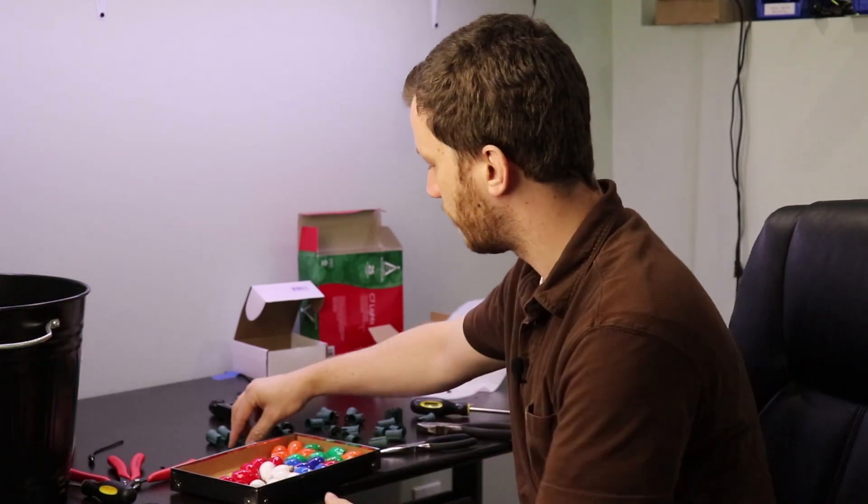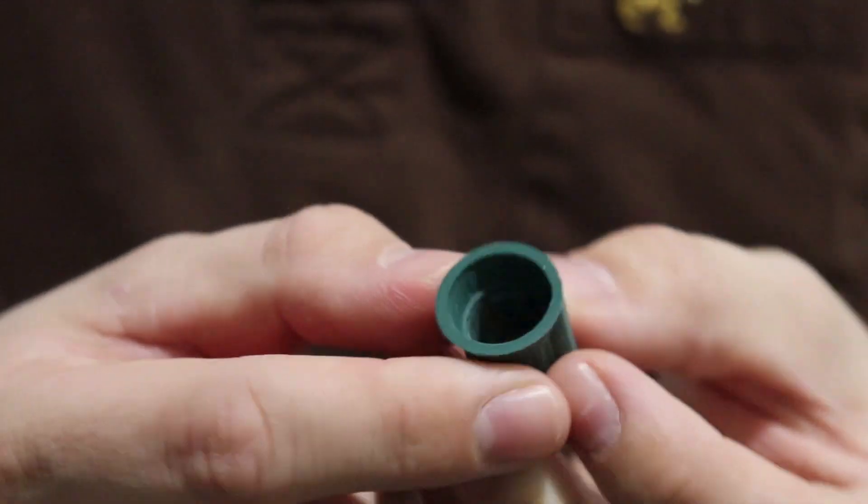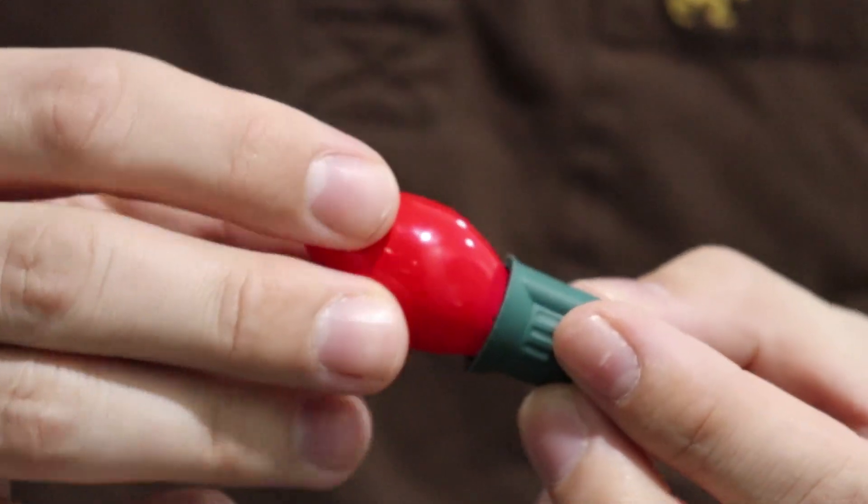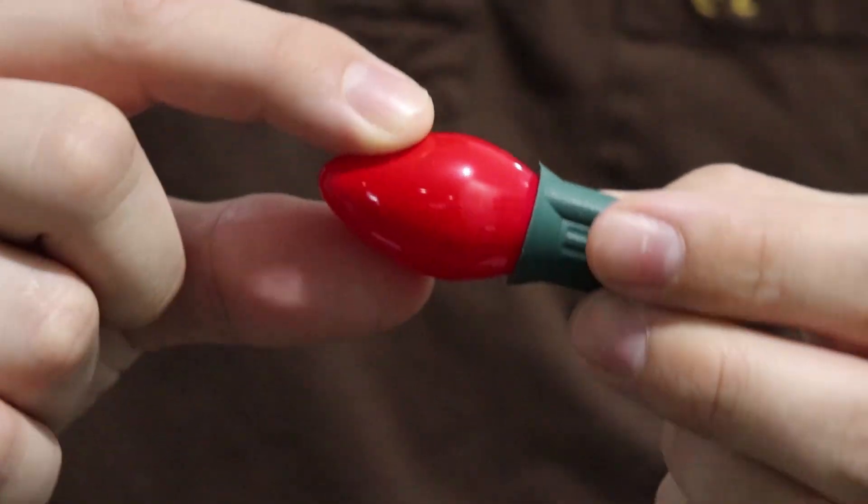Now the next step I'm going to do is finish hollowing out the green base part so that I can slip the LEDs through, and then I'm going to glue a bulb onto each of the green bases.